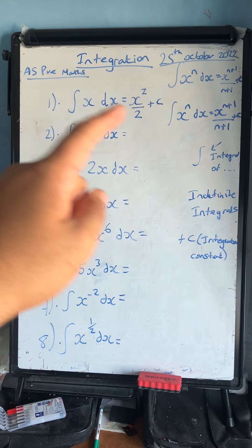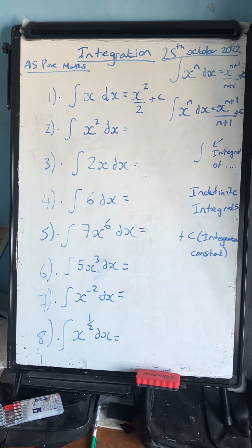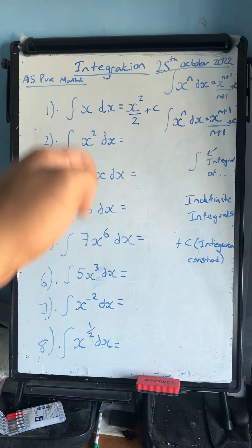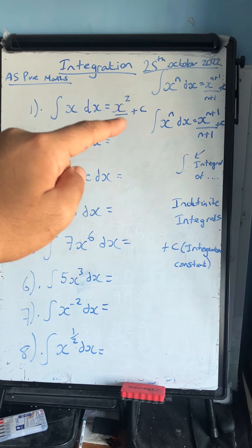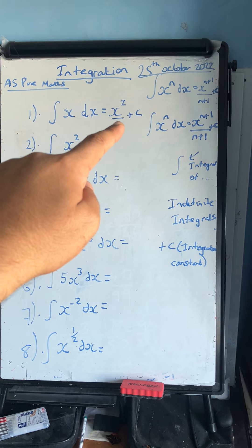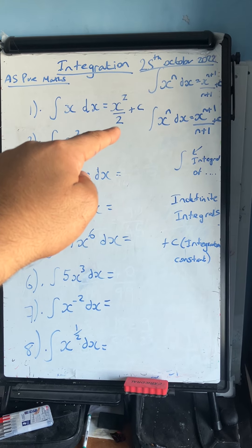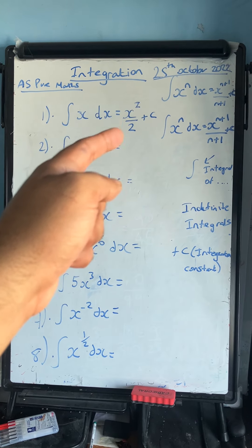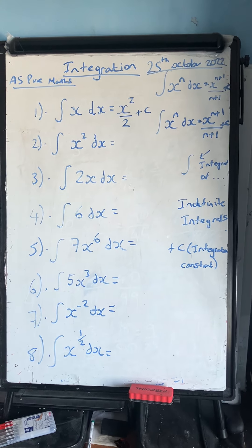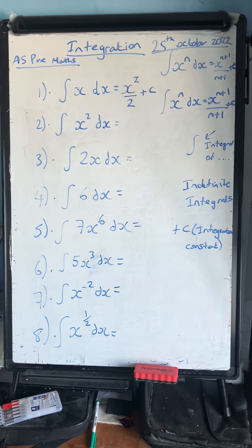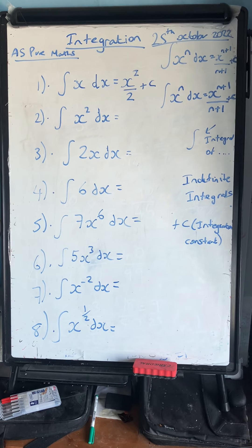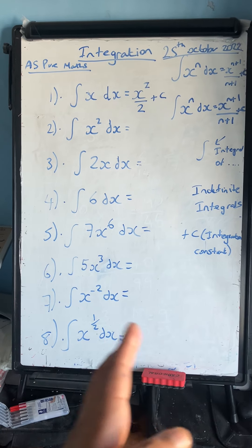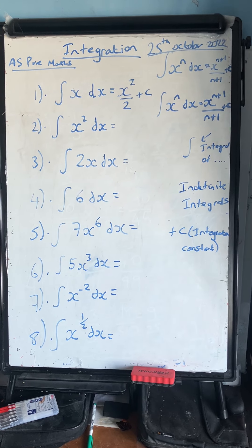Question 1: the integral of x dx. I'm integrating x to the power of 1 — there's an invisible power of 1. Adding 1 to the power and dividing by the new power gives x to the 1 plus 1, divided by 1 plus 1, plus c. That's x squared over 2 plus c, or equivalently one half x squared plus c.